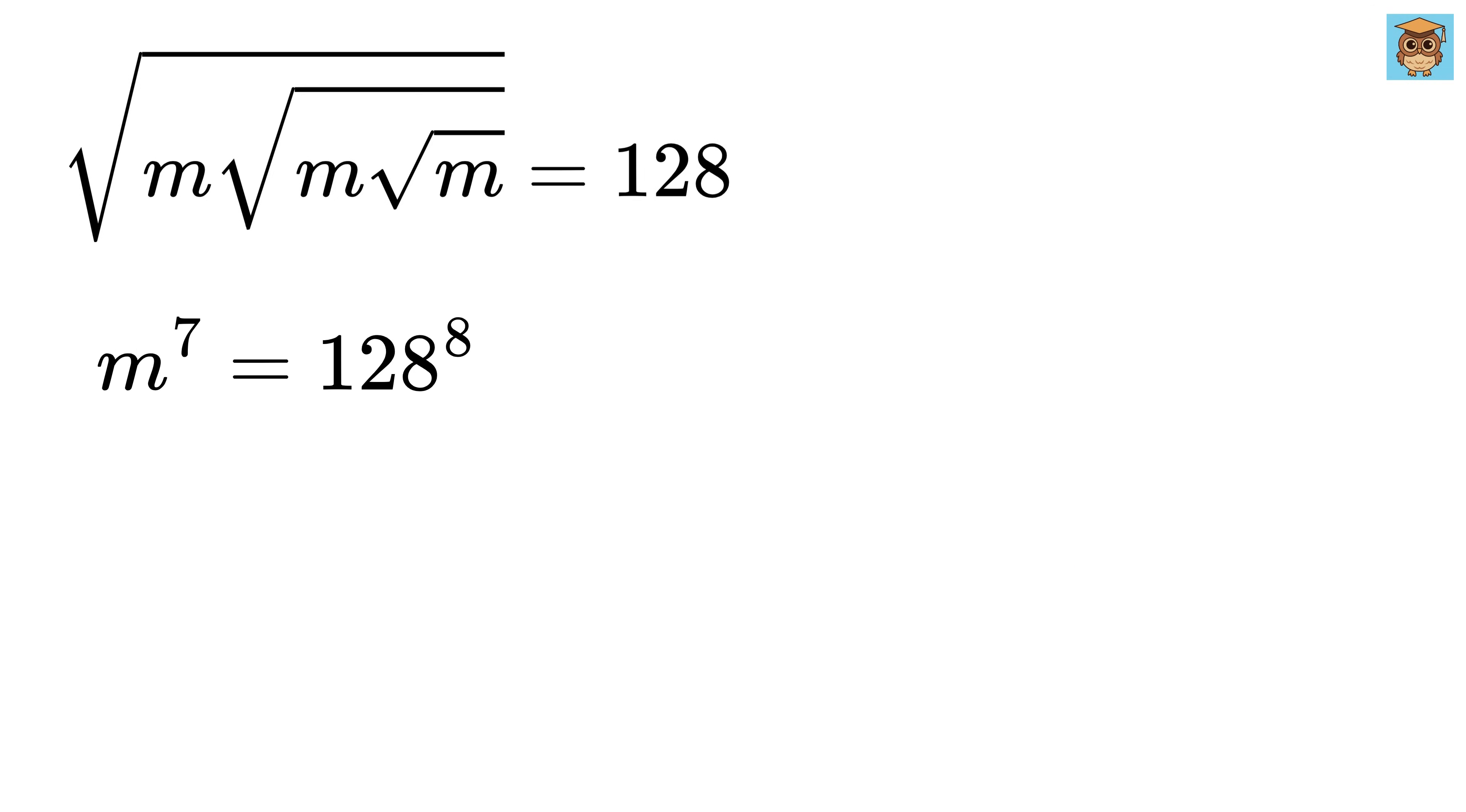Here comes the magic. 128 can also be written as 2 times 2 times 2, and so on, 7 times, which makes 128 as 2 raised to the power 7. So, 128 to the power 8 can be written as 2 raised to the power 7 whole raised to power 8, which equals 2 raised to the power 7 times 8.